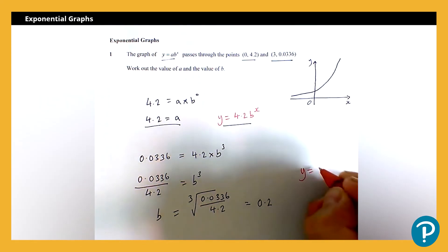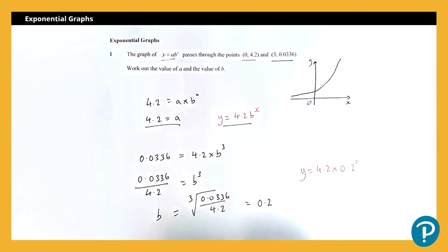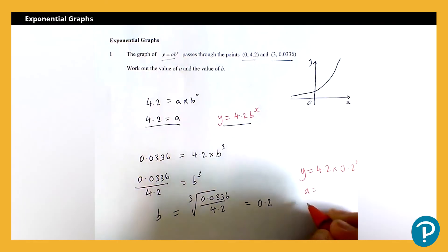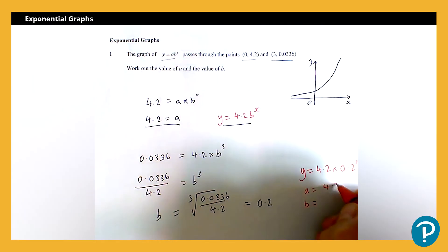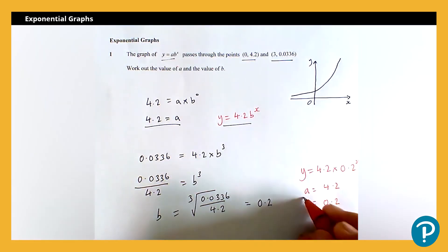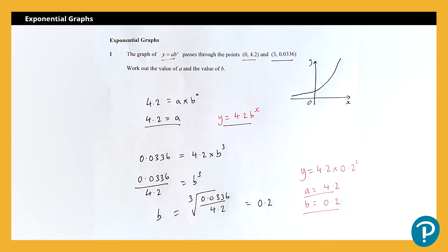So I can write down, I can write my equation is y equals 4.2 multiplied by 0.2 to the power x, or stating the two values I've been asked to state: a is equal to 4.2 and b is equal to 0.2, and we're done.